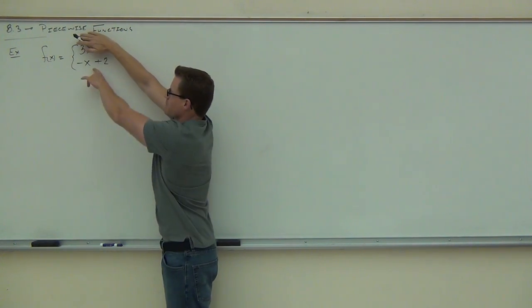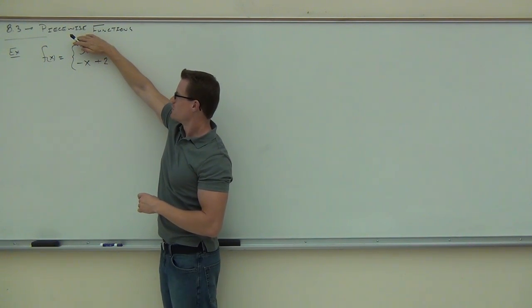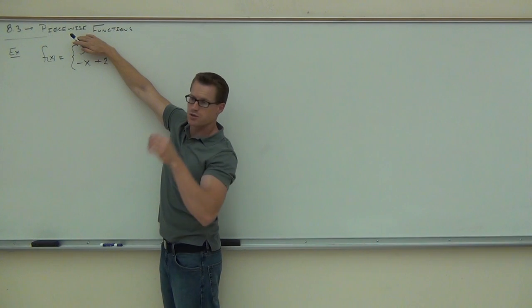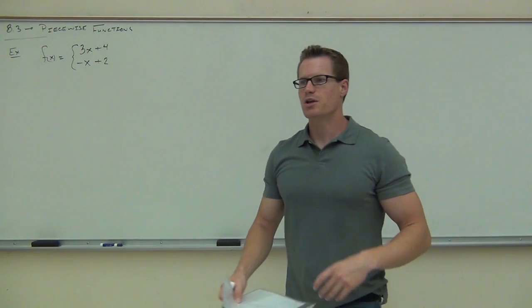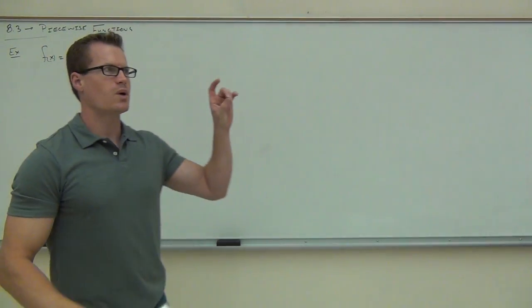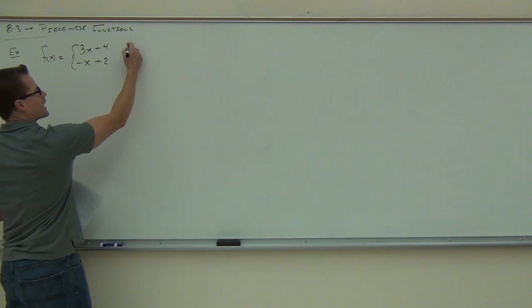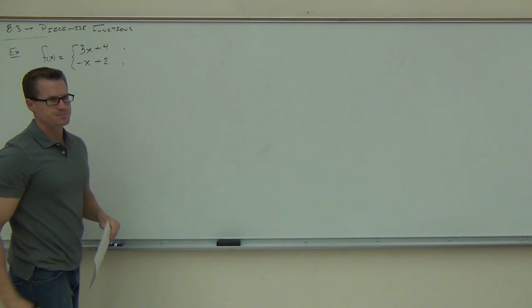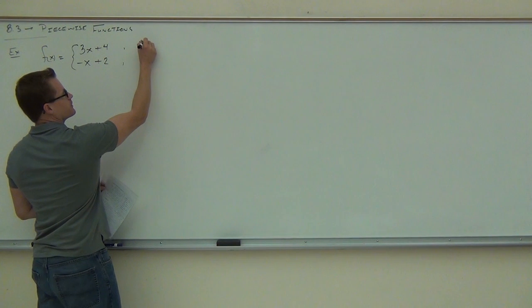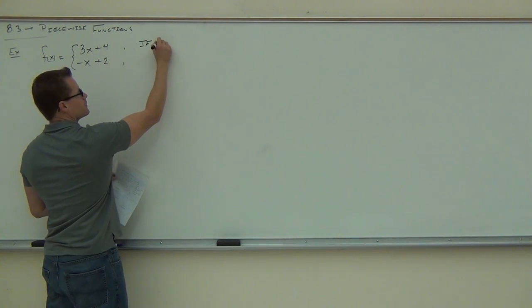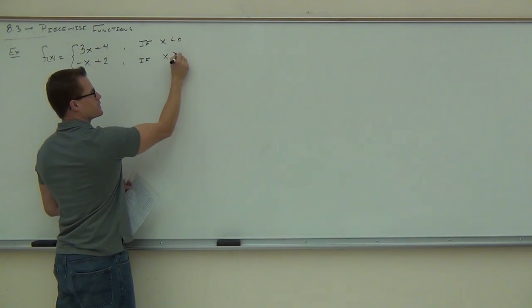When you're talking about a piecewise function, we put those two ideas together, but we do it with some directions. After each function, you're going to have a comma, and it's going to tell you when you use this piece. In our case, it'll say: if x is less than 0, or if x is greater than or equal to 0. You're always going to have this situation where you have less than and greater than something — it doesn't necessarily have to be 0.